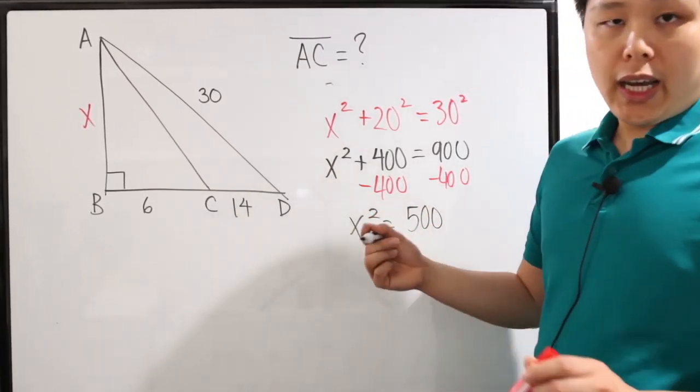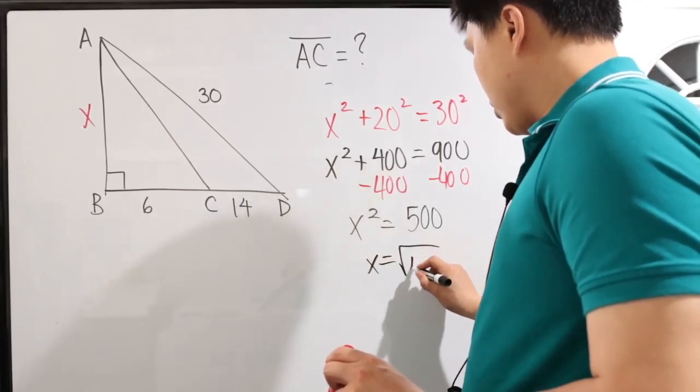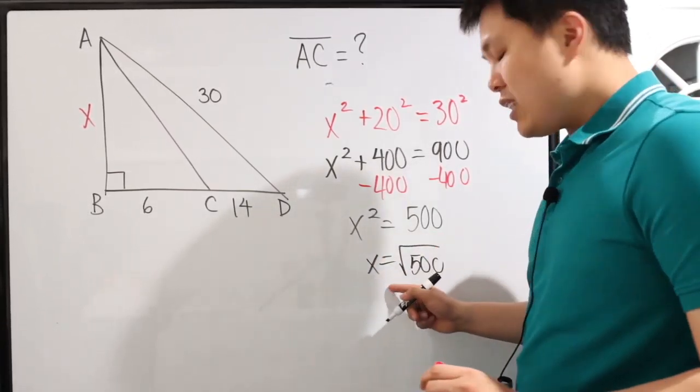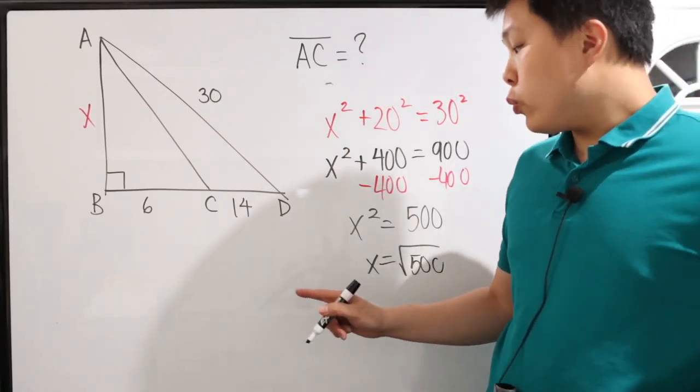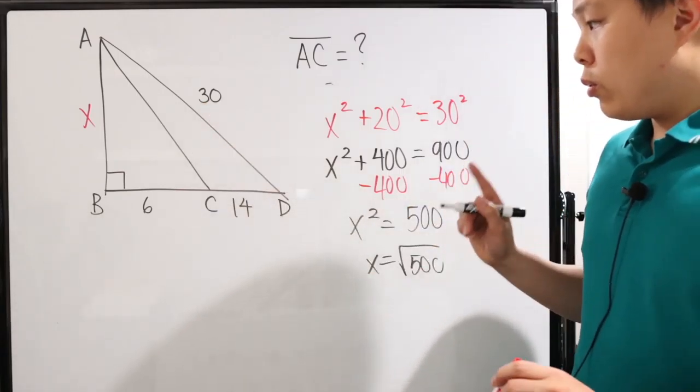And so we have X squared equals 500. Okay, now that just means X equals square root 500. But in all honesty, this is not really necessary. Because since we don't really care about what X is, we're just trying to find what AC is.